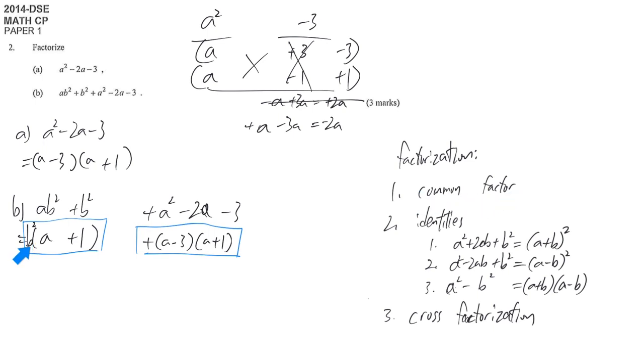So in this term we have b and also we have bracket (a + 1). In this term we have bracket (a - 3). We also have bracket (a + 1). So it's obvious that our common factor is bracket (a + 1).